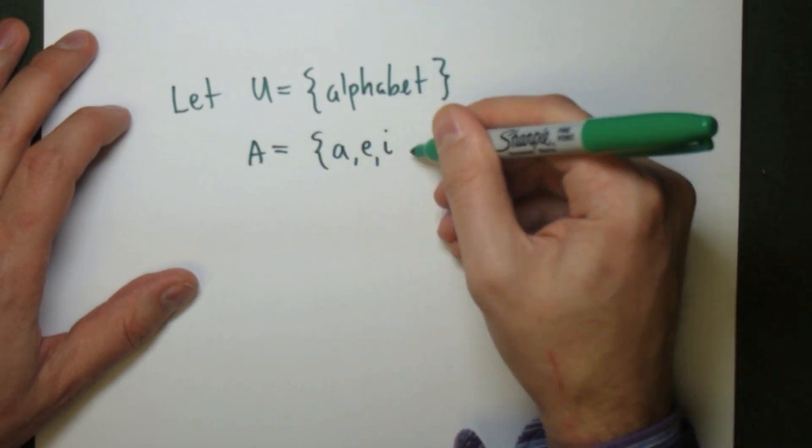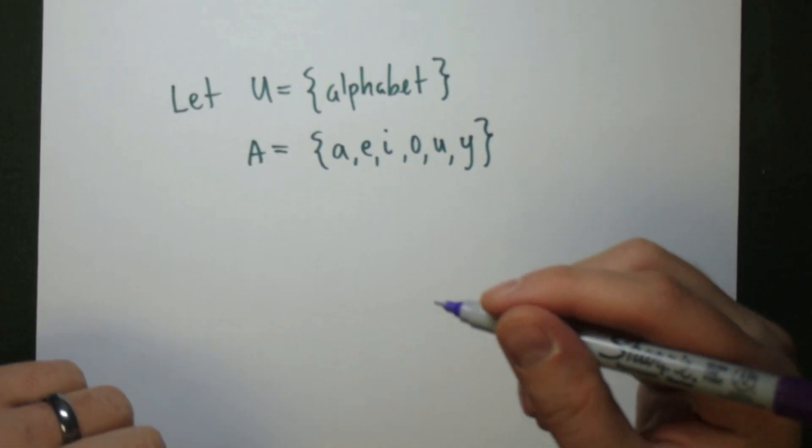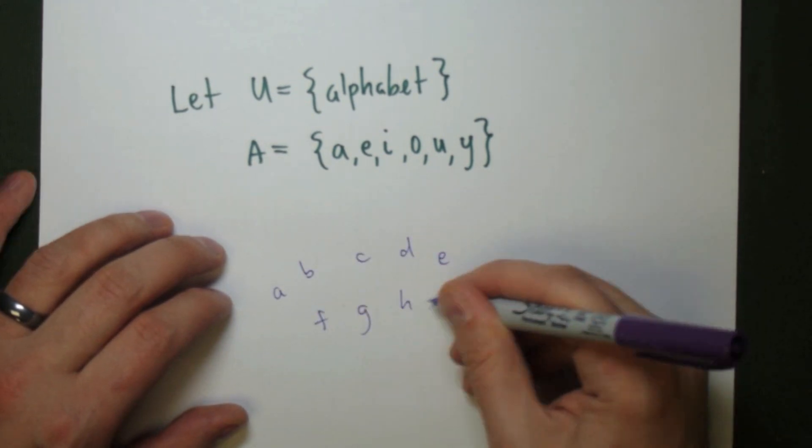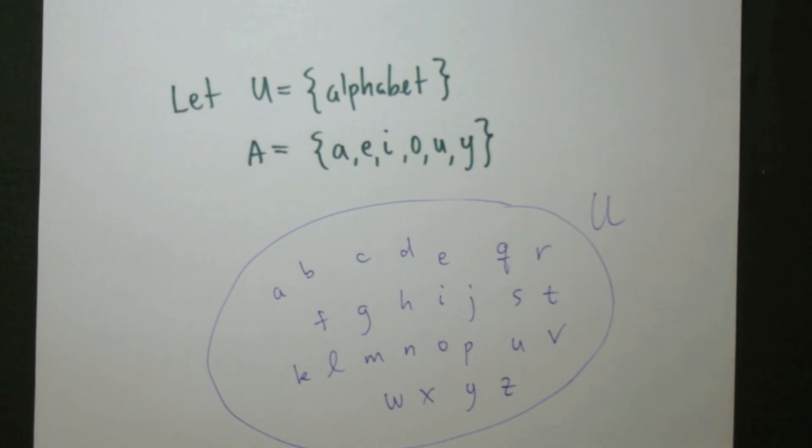So as an example, if the universe is the alphabet, and we take A to be the vowels including Y, then we can look at the complement by taking a look at the picture. So we write down all the letters. That's going to be our universe.